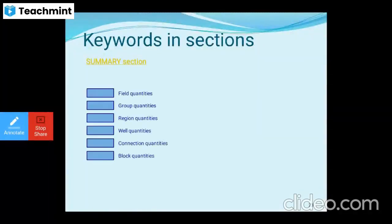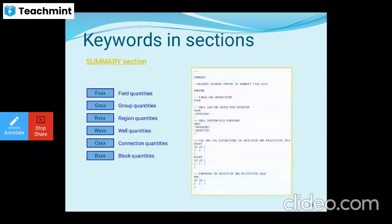In the SUMMARY section, you define field quantities, group quantities, region quantities, well quantities, connection quantities, and block quantities. The output of the summary field data is shown on the right side.